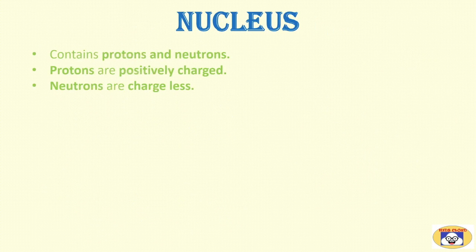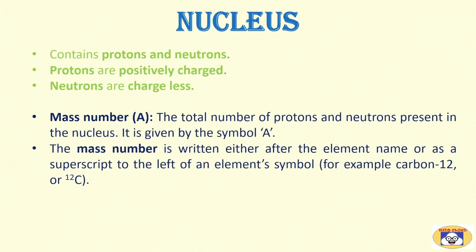Let's learn about the first part of atom that is nucleus. Nucleus contains both protons and neutrons. Protons are positively charged while neutrons are chargeless. Let's learn two more terms which describe atoms more precisely. First is mass number. The total number of protons and neutrons present in the nucleus is called as mass number. It is given by the symbol A. The mass number is written either after the element name or as a superscript to the left of an element symbol. Example is shown in the bracket.